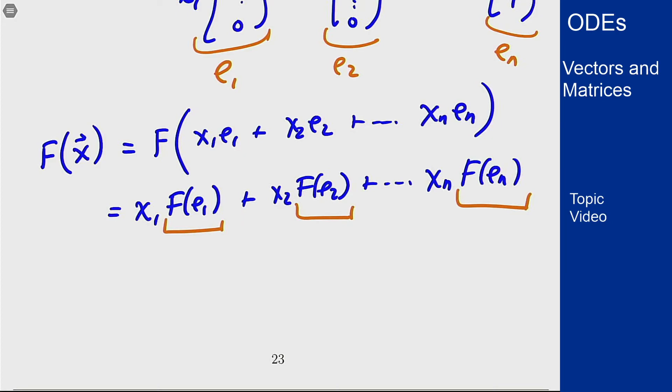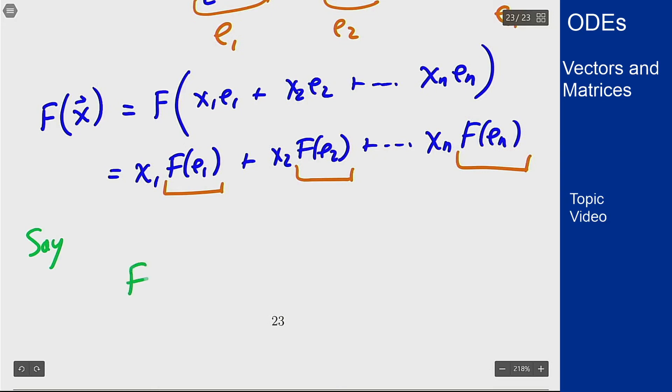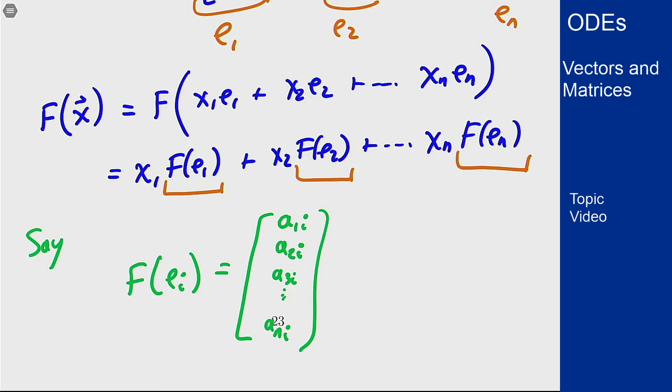Let's write those out. Let's say that f of ei gives me a vector, because that's what it's going to do. It's going to map this [1, 0, 0, ...] into another vector, and let's say this is [a1i, a2i, a3i, ..., ani]. So for every i I get one of these column vectors, because that is what this is going to give.